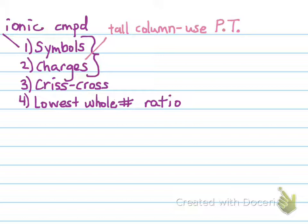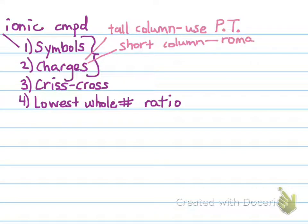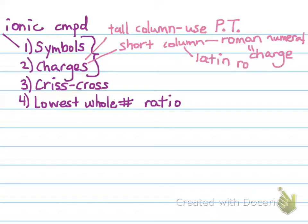Group 5A has a charge of −3, group 6A is −2, and group 7A is −1. When we get into the short columns, the charge is given to us in one of two ways: if we have a Roman numeral, that's equal to the charge of that metal. Or it can be given with a Latin root — using our helper sheet — where -ous indicates the lower charge and -ic indicates the higher charge.